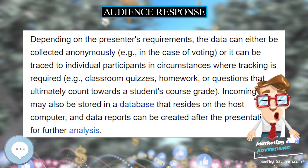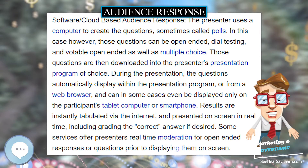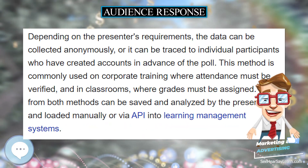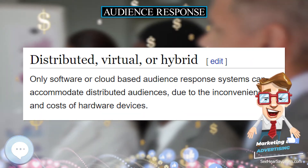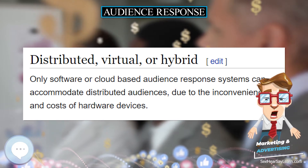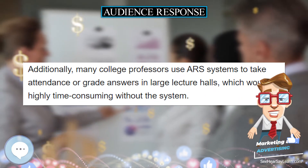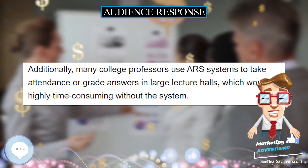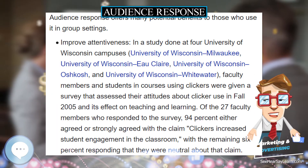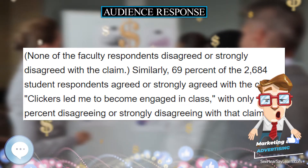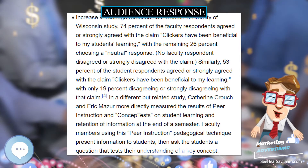There are many reasons for the use of audience response systems. The tendency to answer based on crowd psychology is reduced because, unlike hand raising, it is difficult to see which selection others are making. The ARS also allows for faster tabulation of answers for large groups than manual methods. Additionally, many college professors use audience response systems to take attendance or grade answers in large lecture halls, which would be highly time consuming without the system.